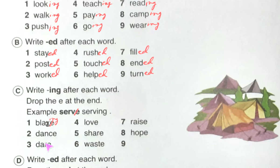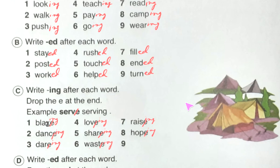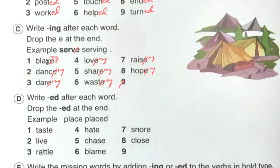Continuing exercise C — drop the e and add ing: dare→daring, love→loving, share→sharing, waste→wasting, raise→raising, hope→hoping.